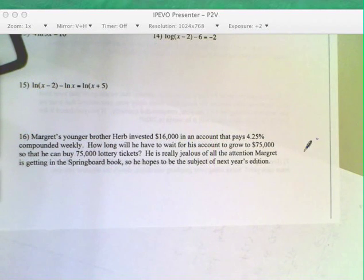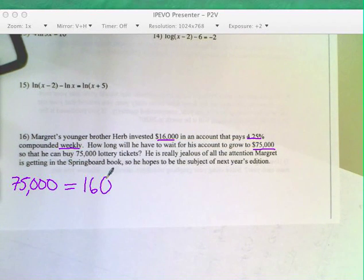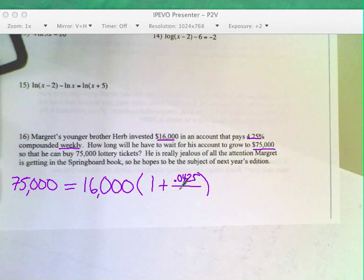Anyway. Now for the last problem. Margaret's younger brother, Herb, invested $16,000 in an account that pays 4.25% weekly. So right away, you can read this and see that it's growing to $75,000. Herb is not a very smart investor. He's just trying to grow his money to buy a bunch of lottery tickets. Silly Herb. All right. So you got your principal. Invest $16,000. And it's compounded weekly, 0.0425%. Weekly, there are 52 weeks in a year. So it's raised to the 52T. So that's kind of following the compound interest formula.